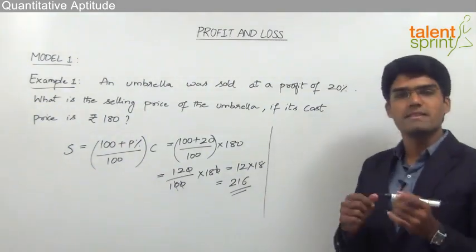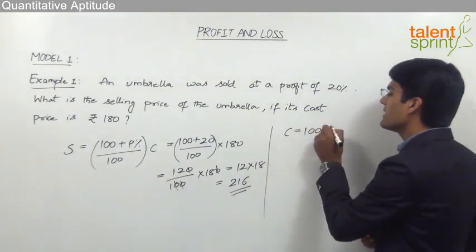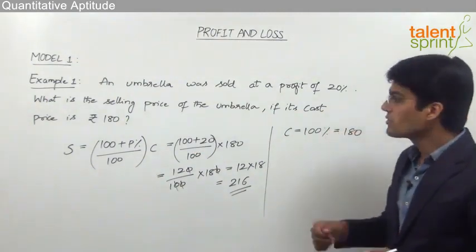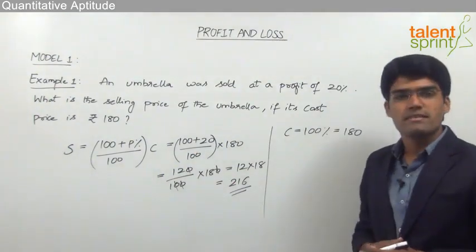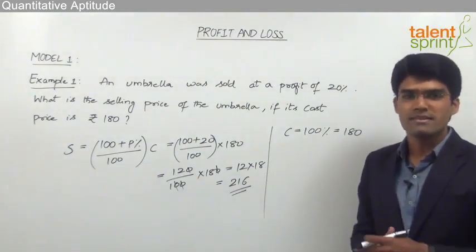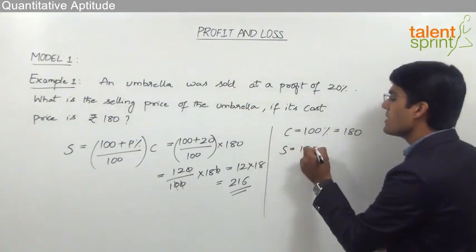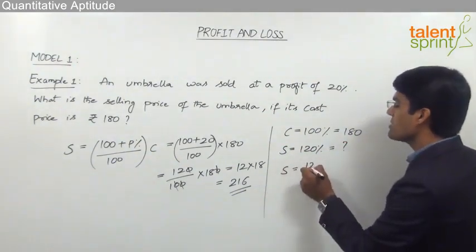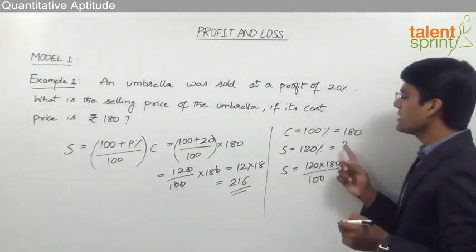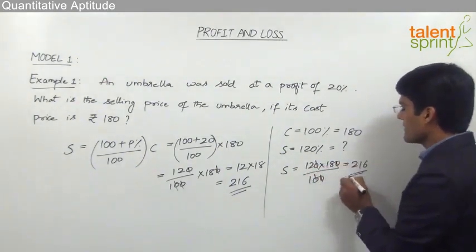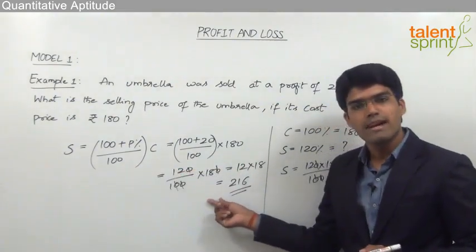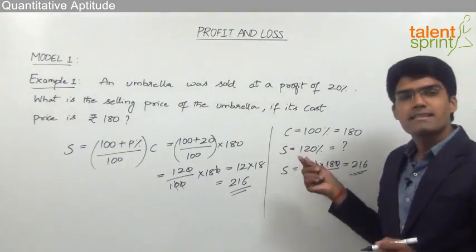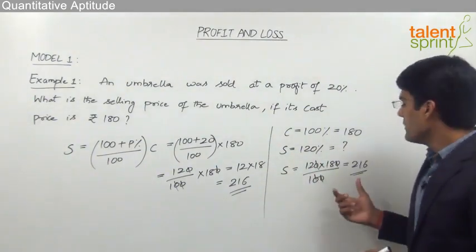Alternatively, cost price is always equivalent to 100%, and the cost price here is rupees 180. So 100% is equivalent to 180. When the profit is 20%, the selling price = 100 + 20 = 120%. So selling price = 120% and we need to find its actual value. By cross multiplication: selling price = 120 × 180 / 100, zeros cancel, giving the answer as 216 rupees. So either use the formula or use the percentage concept with cross multiplication to get the required answer.